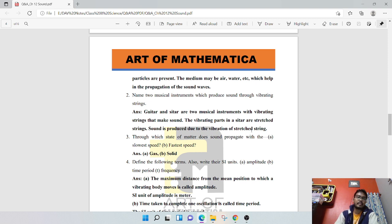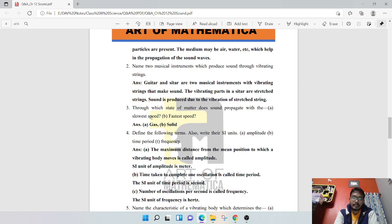Through which state of matter does sound propagate with the slowest speed and fastest speed? In gas, sound propagates with the slowest speed. In solid, sound propagates with the fastest speed.